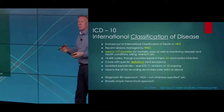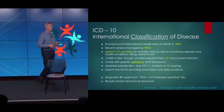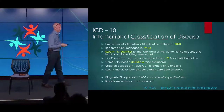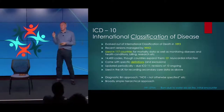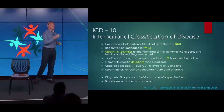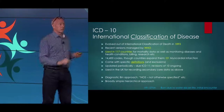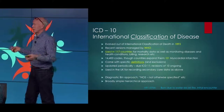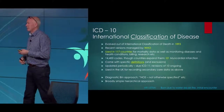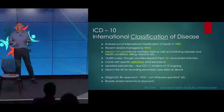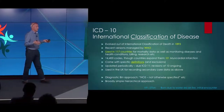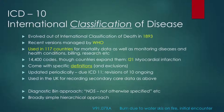ICD is probably the most widely known in this room — the International Classification of Diseases. Its origins go back to Florence Nightingale in the 1860s. It's managed by the WHO, used in 117 countries for mortality data, billing, research, and health conditions. It has about 14,500 codes — some countries have expanded it significantly; the US has closer to 60,000. In the UK we currently use it for recording secondary care data. ICD-10 has a direct map into SNOMED.